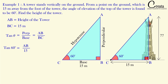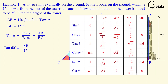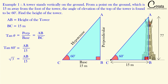We get tan 60° = AB / 15. What is the value of tan 60°? Let's check the trigonometric ratio table — tan 60° equals √3. On solving, we get AB = 15√3. That is the answer: the height of the tower is 15√3 meters.